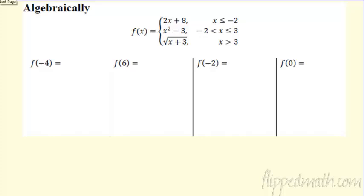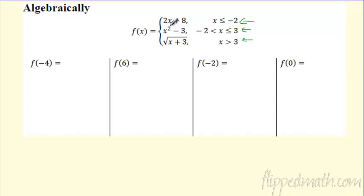Let's take a look at some examples. Algebraically, it's not too bad. Check out this piecewise function — it's made up of three separate functions. The first one is linear, that looks like a line: mx plus b. Here's a quadratic — it's got a square in it. And then this one's a square root. So definitely three different functions. Can you evaluate it algebraically? Sure.